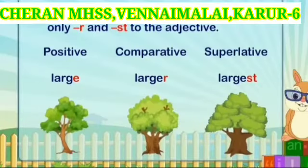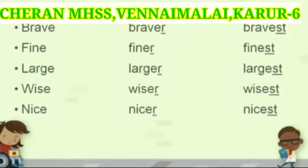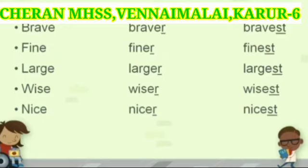Rule 2: When the positive ends in -e, we add only -r and -st to the adjective. For example: large, larger, largest. Brave, braver, bravest. See this word 'brave' — the last letter is 'e', so for the comparative degree we add only -r (since 'e' is already there), making 'braver'. Similarly for the superlative, we add only -st, making 'bravest'. More examples: fine, finer, finest. Large, larger, largest. Wise, wiser, wisest. Nice, nicer, nicest.